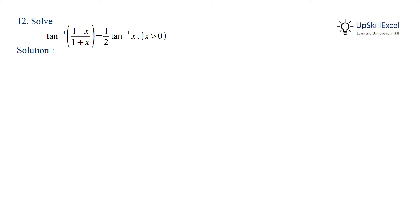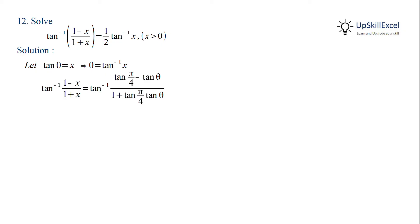Solve tan inverse of (1 minus x) by (1 plus x) is equal to half of tan inverse x, where x is greater than 0. Let tan theta equal x, or theta equal tan inverse x. Substituting this on the left hand side and also applying tan pi by 4 is equal to 1.